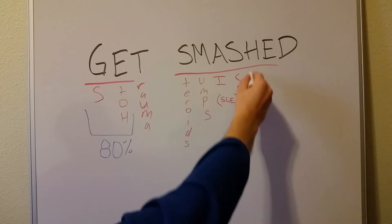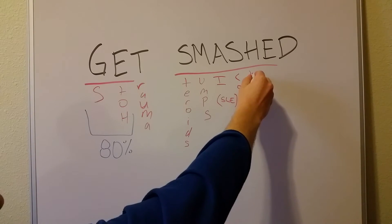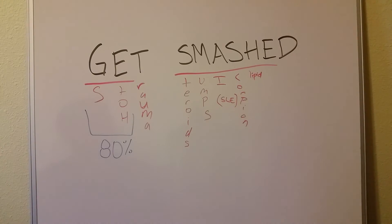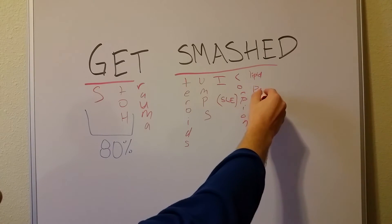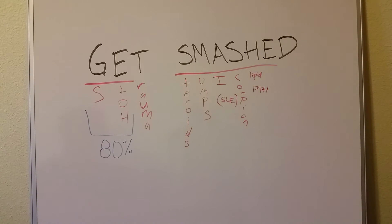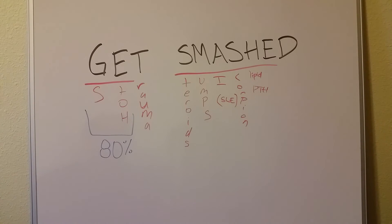The H stands for two different things. First, hyperlipidemia — if you have an obese or hypercholesterol patient, that excess fat can cause pancreatitis. The other H is hyperparathyroidism, because if parathyroid hormone is elevated, calcium levels in the blood are elevated, and calcium is part of the pathogenesis of pancreatitis. So for H you have hyperlipidemia and hyperparathyroidism.